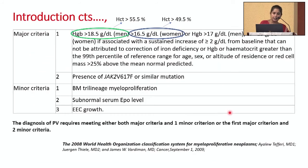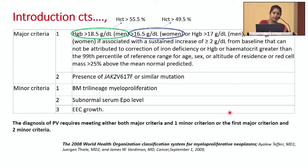If a patient meets that cutoff level, you should be alarmed and send a referral to a hematologist. The British Society of Haematology (BSH) guideline published in 2018 showed that patients with a persistently raised venous hematocrit above 52% for males and above 48% for females — roughly equivalent to hemoglobin above 18.5 in males and 16.5 in females — should be investigated. This is more or less similar to the WHO criteria.